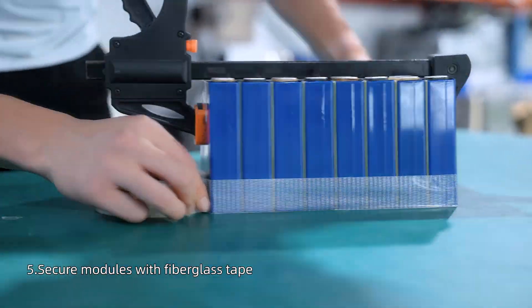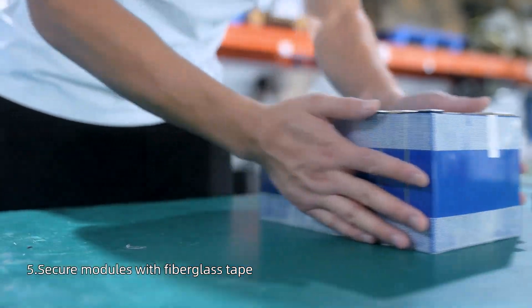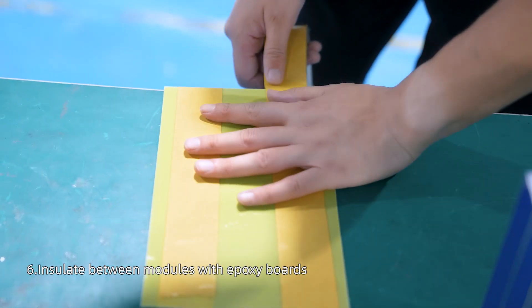Wrap modules with fiberglass tape. Insulate between modules with insulation balls.